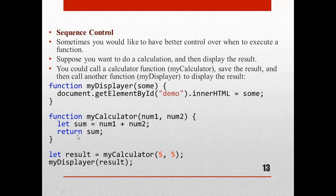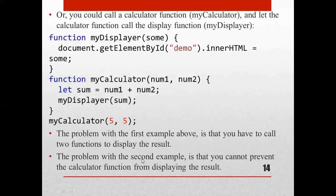In the first example, we save the result into a variable and then call myDisplay to show it, meaning we call two functions to display the result. In the second example, the problem is that we cannot prevent the calculator function from displaying the result, because myDisplay is written directly inside myCalculator.